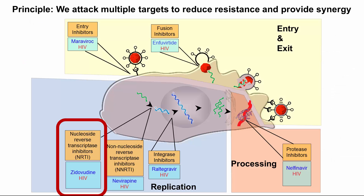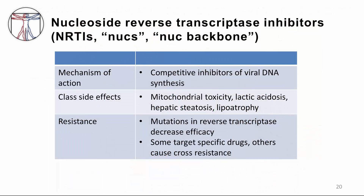Let's now turn our attention to the nucleoside reverse transcriptase inhibitors, or NRTIs — also affectionately called 'nukes.' These were the first HIV class developed. In 1987, the FDA approved zidovudine, or AZT, as the first drug. Drugs in this class work as competitive inhibitors of viral DNA synthesis. Class side effects include mitochondrial toxicity, lactic acidosis, hepatic steatosis, and lipoatrophy.